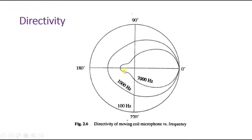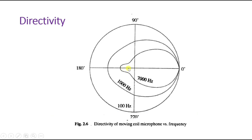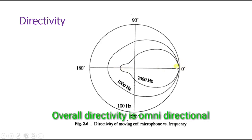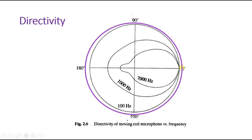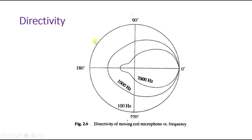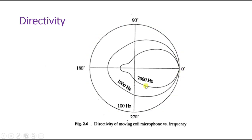Let us understand directivity. Directivity is shown with respect to different frequencies. At 100 Hz, the directivity is quite circular. At 1000 Hz, the directional characteristic is more focused in one direction. At 7000 Hz, it has higher magnitude in that direction and lower in others. The microphone is placed at the zero-degree angle. Overall, the directivity changes slightly with frequency, but the overall directivity is omnidirectional.